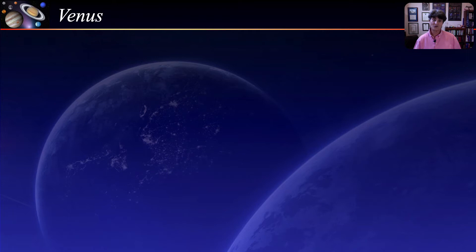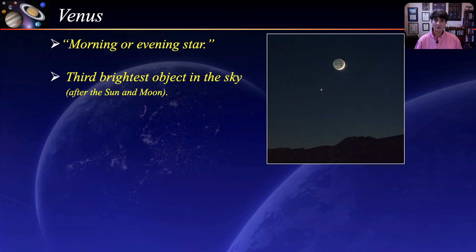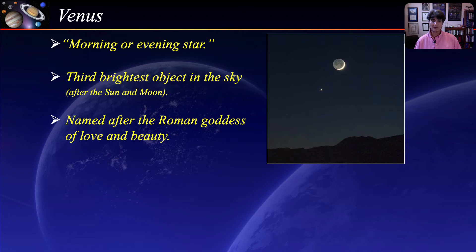The next planet is Venus. Venus is sometimes called the morning or evening star — of course it is not a star, but it appears that way to the naked eye. Venus is the third brightest object in the sky after the Sun and the Moon. It is so bright because it is surrounded by thick clouds that reflect most of the sunlight. Venus is named after the Roman god of love and beauty, probably because it was the brightest and most beautiful of the five planets known to ancient astronomers.